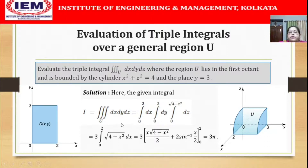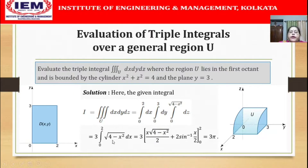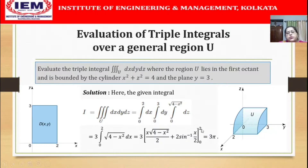We are left with evaluating 3 times the integral of √(4 - x²) dx from 0 to 2. Using the formula for ∫√(a² - x²) dx, we get 3 multiplied by [x√(4 - x²)/2 + 2 sin⁻¹(x/2)] from 0 to 2. Putting in the limits, the answer is 3π.